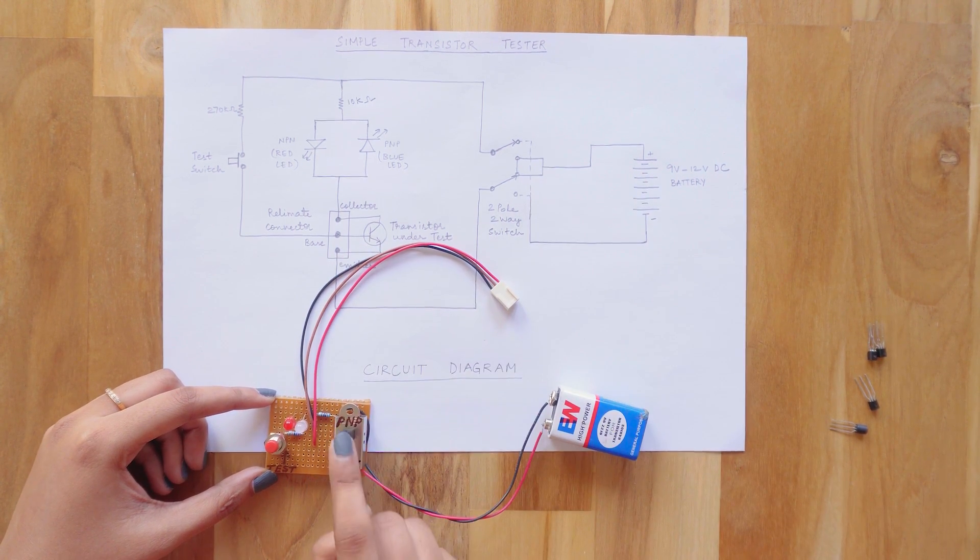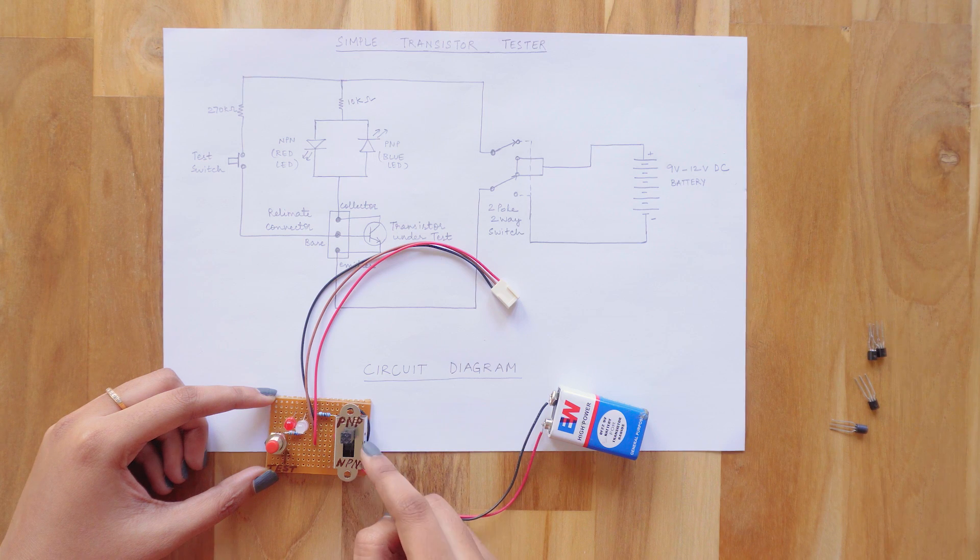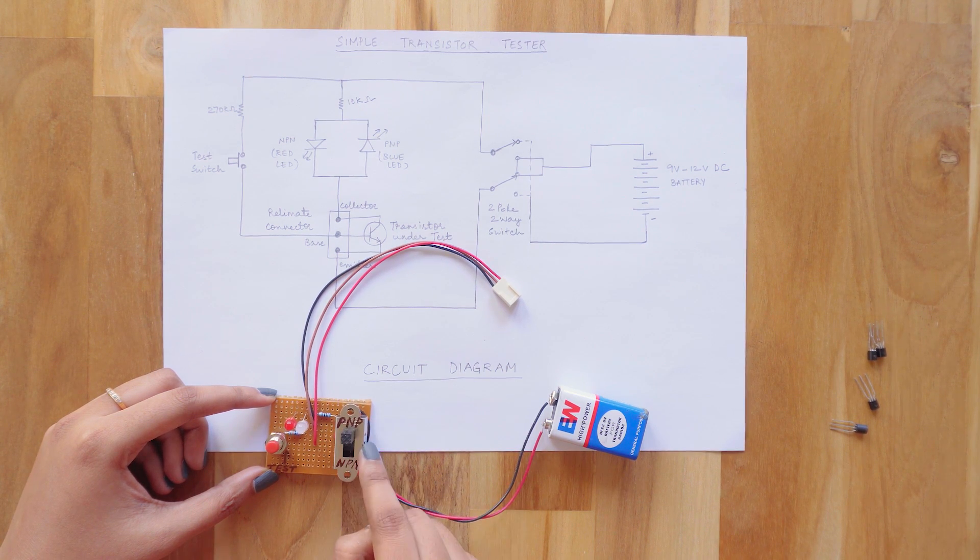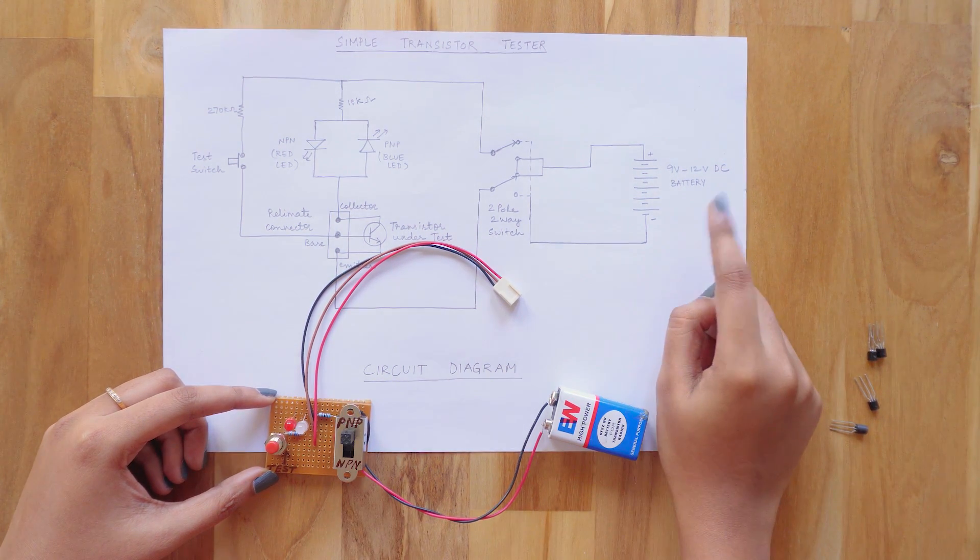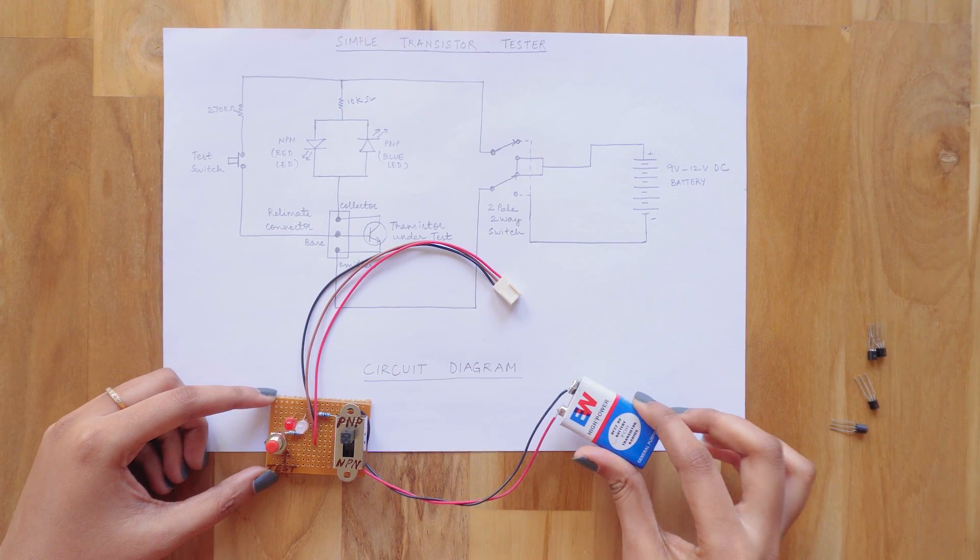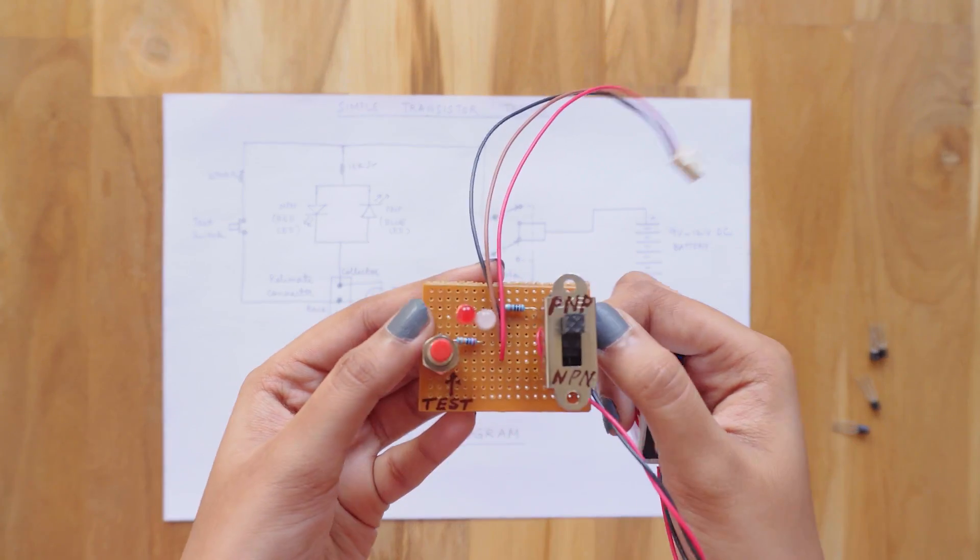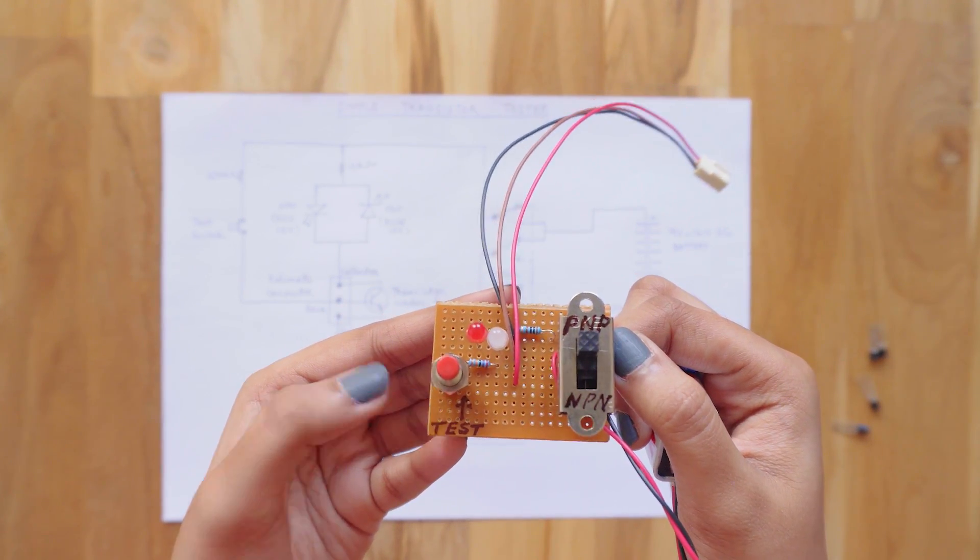Here's the 2-pole 2-way switch. You can see that I've marked NPN and PNP on it. And this is the 9-volt battery. Let me bring this PCB closer so that you can see it clearly.